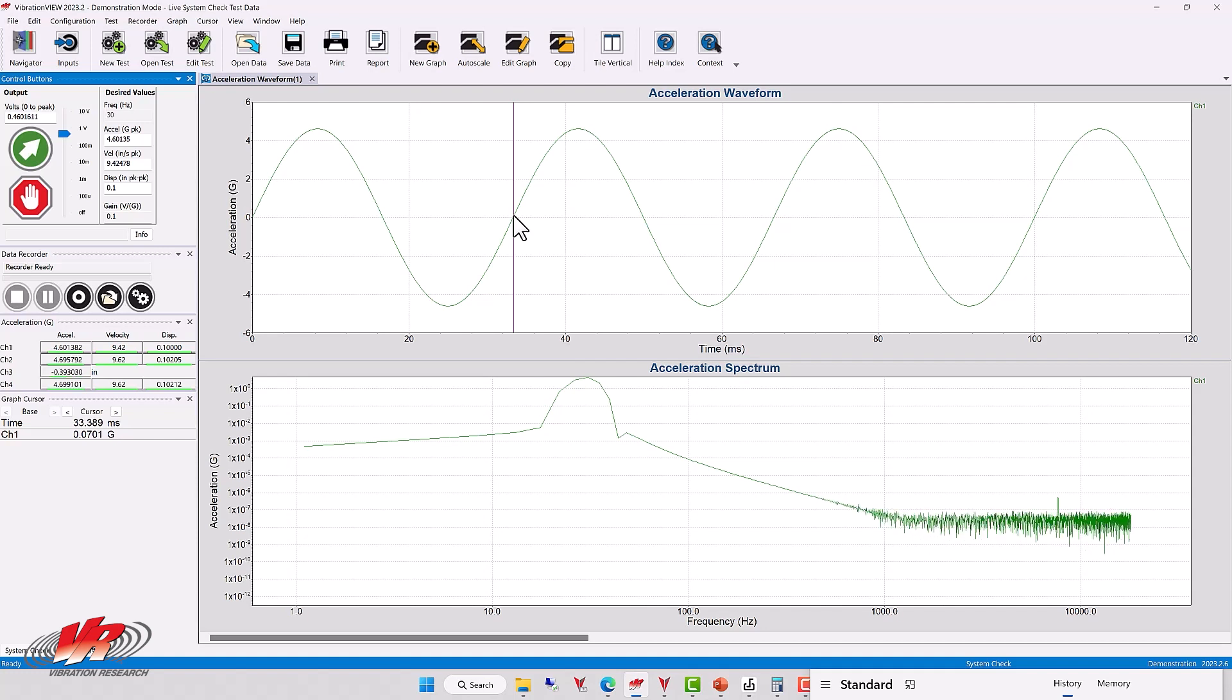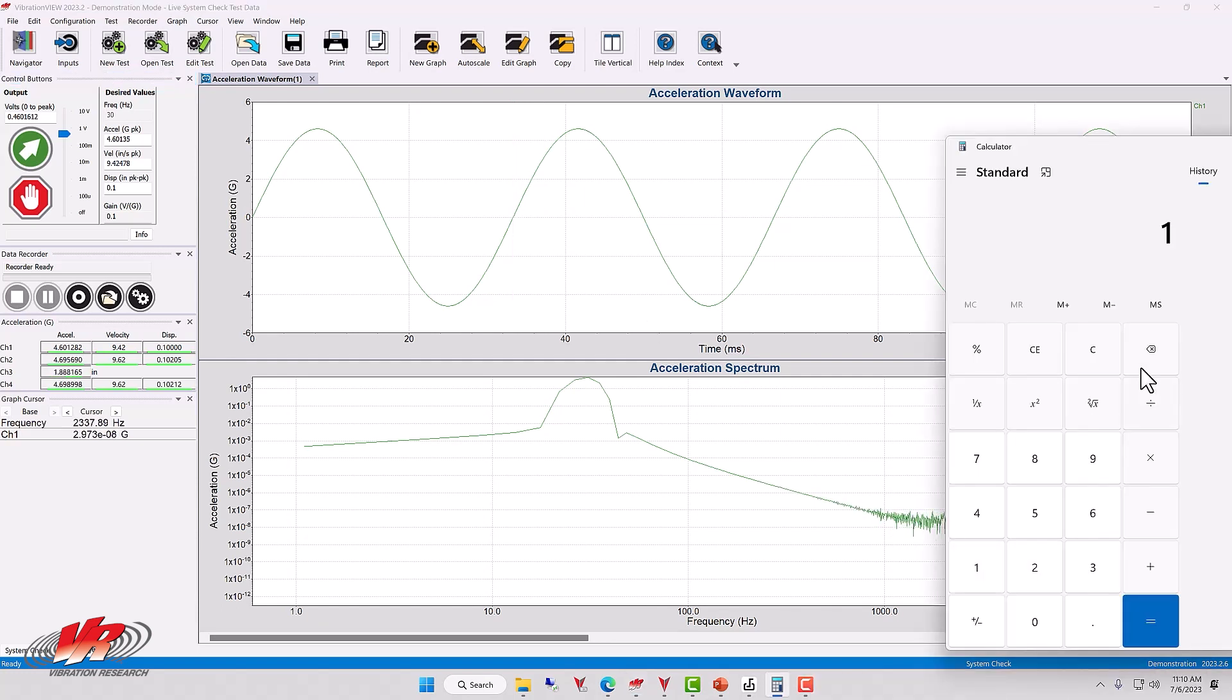How does that compare to frequency? Well, frequency and period are inverses of each other. So if we want to find the frequency we need to take one divided by 33.3 milliseconds. One divided by 33 milliseconds, 0.0338.9 milliseconds, is 29.5 or 30 Hertz, which is our frequency. So frequency and period are inverse relationships.